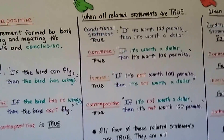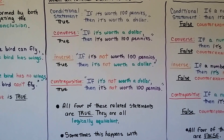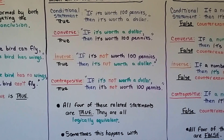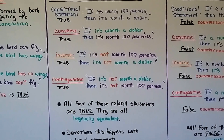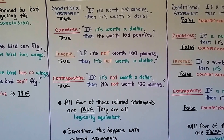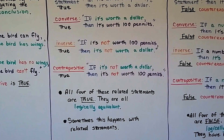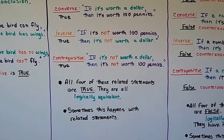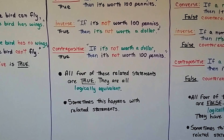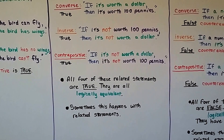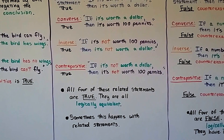Sometimes all the related statements can be true. The conditional statement is true: if it's worth a hundred pennies, then it's worth a dollar. The converse: if it's worth a dollar, then it's worth a hundred pennies — that's true too, same value. The inverse: if it's not worth a hundred pennies, then it's not worth a dollar — also true. The contrapositive: if it's not worth a dollar, then it's not worth one hundred pennies — that's true. All four of these related statements are true; they are all logically equivalent.